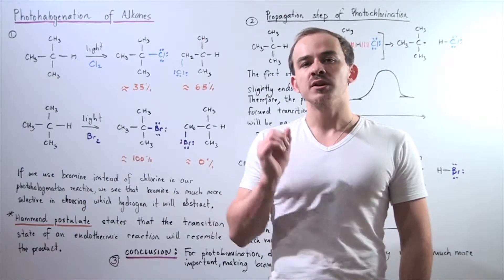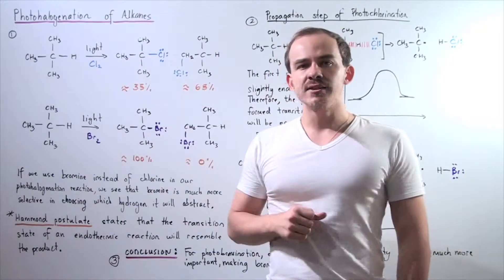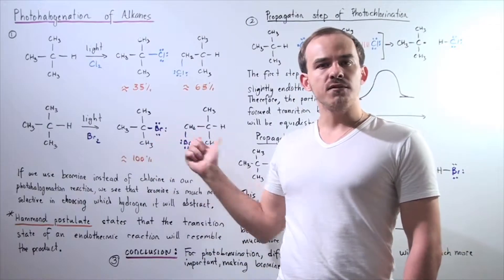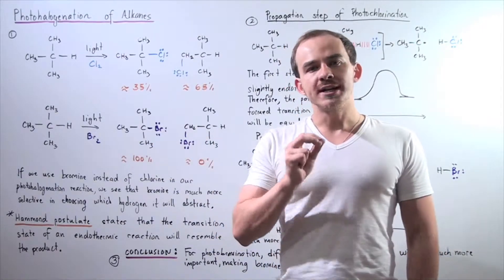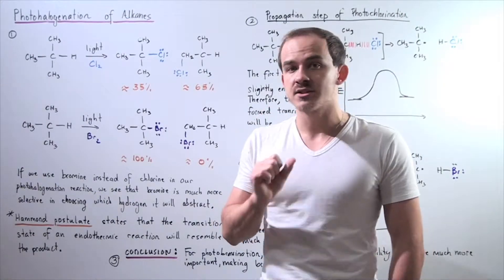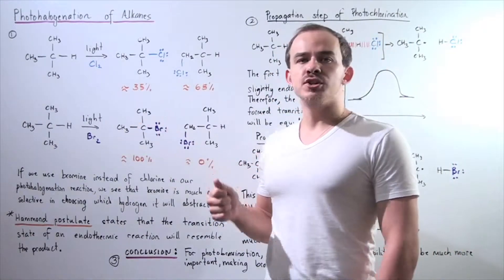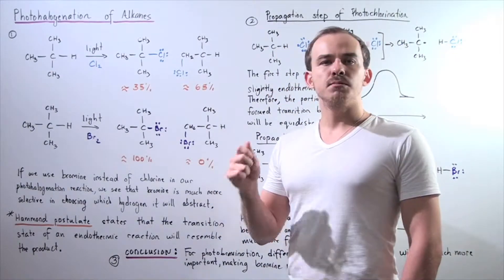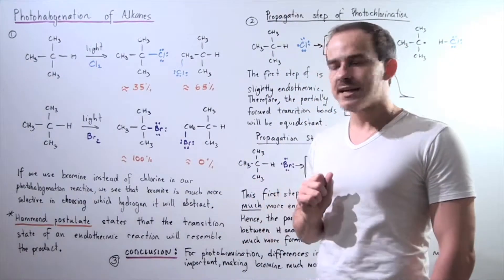Now, what happens if we replace our chlorine halogen with a bromine halogen? What will be the combination of these two products? Well, it turns out that about 100% of our products will be in the tert-butyl bromide form and not about 0% will be in the isobutyl bromide form.